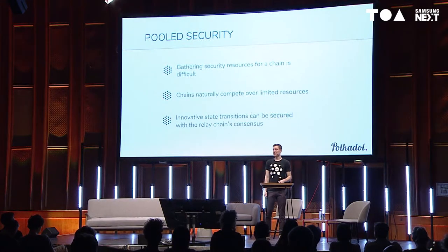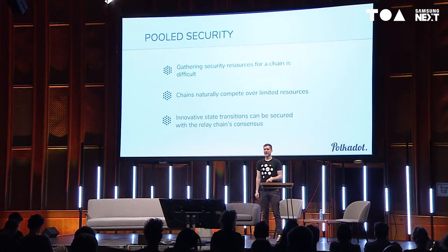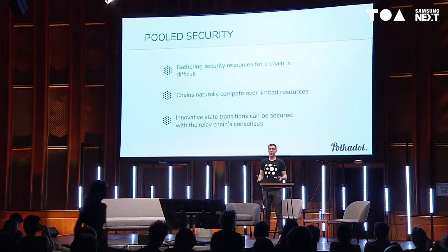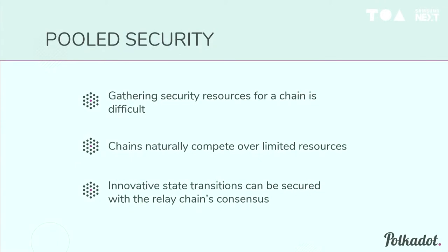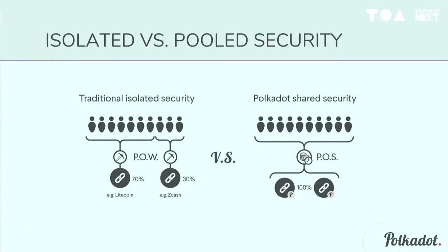With pooled security, the key problem is that gathering security resources for a chain is difficult — you have to find miners or stakers and ensure the overall value of security resources isn't easily attackable. We're already seeing small proof of work chains being attacked because large mining companies can just overwhelm them. They're competing over limited, potentially concentrated resources. Innovative state transitions embedded into the relay chain's consensus are beneficial because we deal with the aggregate of all security gathered across all chains, as opposed to the maximum of any single chain.